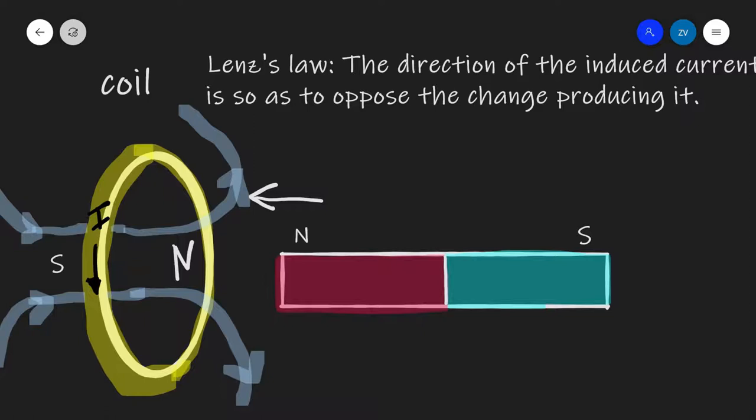Notice that according to Lenz's Law, this induced EMF will turn this solenoid into essentially an electromagnet with the north pole of the electromagnet facing the north pole of the magnet. And this will oppose the change producing it. If the magnet was flipped and this was south facing it, then the current will also flip direction.